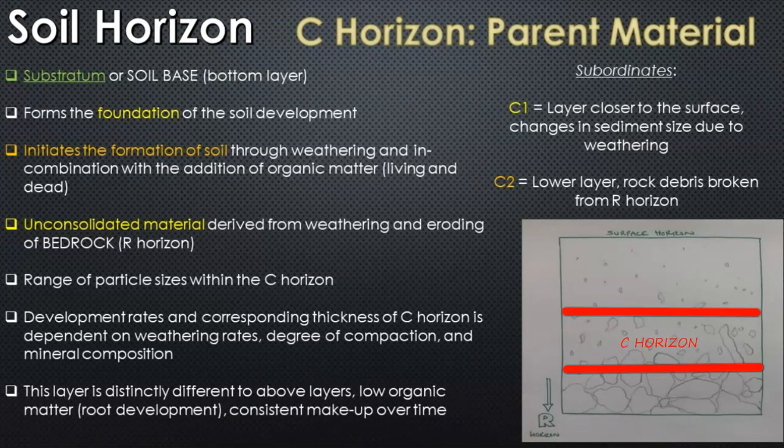The C horizon forms through the breakdown, physically and chemically, of the bedrock at a certain rate based on the composition of the rock, the mineral composition, and the speed of weathering, which can change per location and per climate over a certain period of time. This is called the substratum or soil base — it's the bottom layer of the soil, which is the interface between the solid consolidated rock and the organic-mineral mixture with air pockets and water. It forms the foundation for soil.